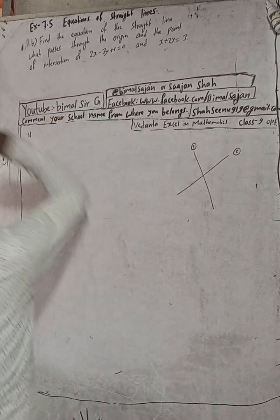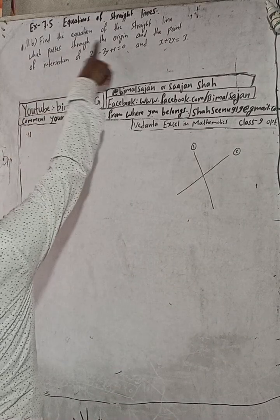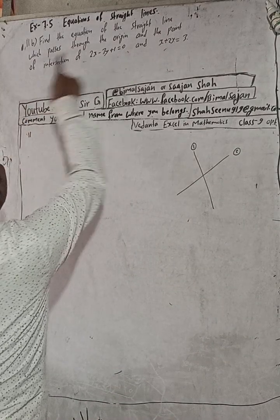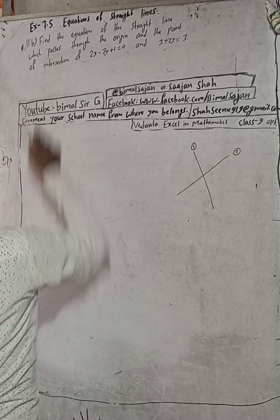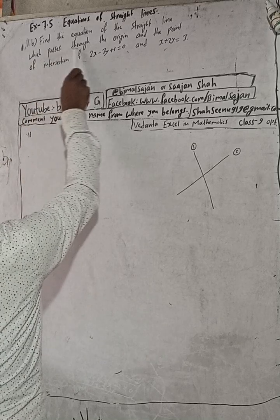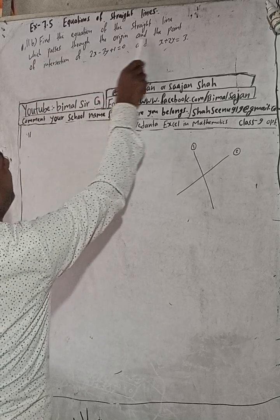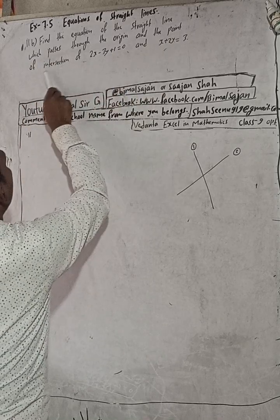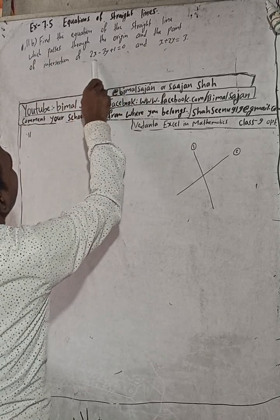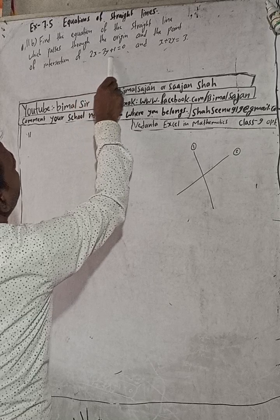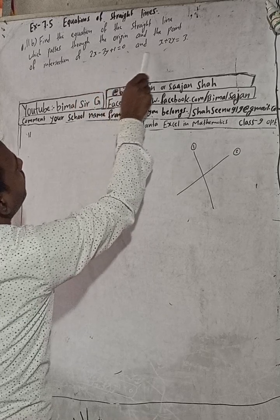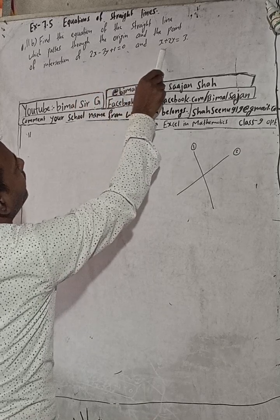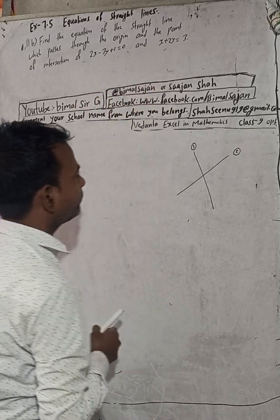Here the question is: find the equation of the straight line which passes through the origin and the point of intersection of 2x - 3y - 1 = 0 and x - 2y = 3.